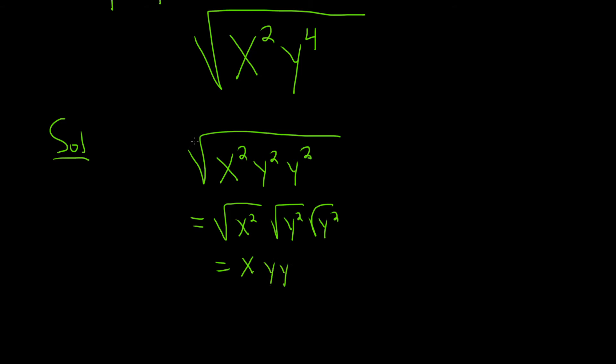So because it's a square root, we want to write everything as something squared. If it was a cube root, we would want to write everything as something cubed. This is going to be x times y squared. And that will be the final answer.